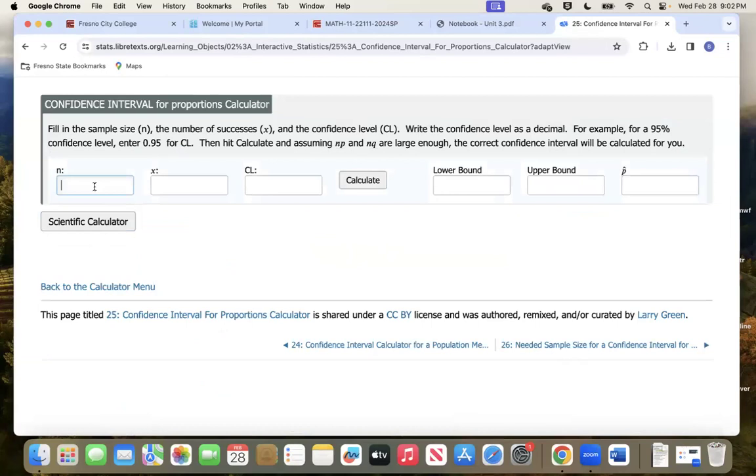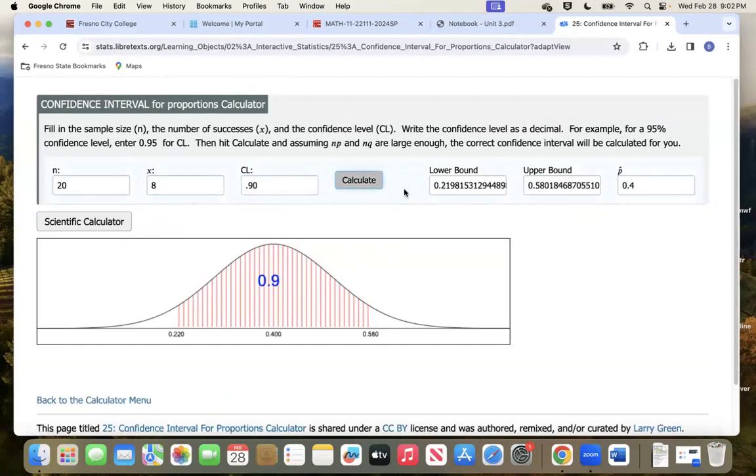Click on that. There's the n, so the total number of females in our study was 20. x is how many you want—we want the eight who got A's because they asked us what percentage got A's. Confidence level 0.90, make sure that's a decimal. Calculate. There it is, there's the exact numbers: 21.98, 58.01, or round that to two decimal places. There it is, we are ninety percent confident that somewhere between 22 and 58 percent of all the females in America who take the water safety test got an A.